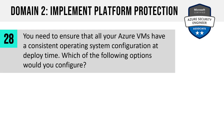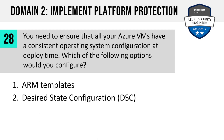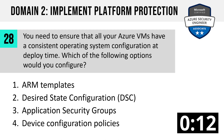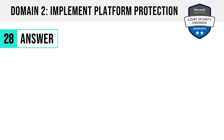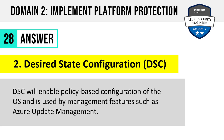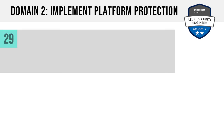Number 28. You need to ensure that all your Azure VMs have a consistent operating system configuration at deploy time. Which of the following options would you configure? ARM templates, desired state configuration, application security groups, or device configuration policies? The answer is two: desired state configuration, or DSC. DSC enables policy-based configuration of the OS and is used by management features like Azure Update Management.